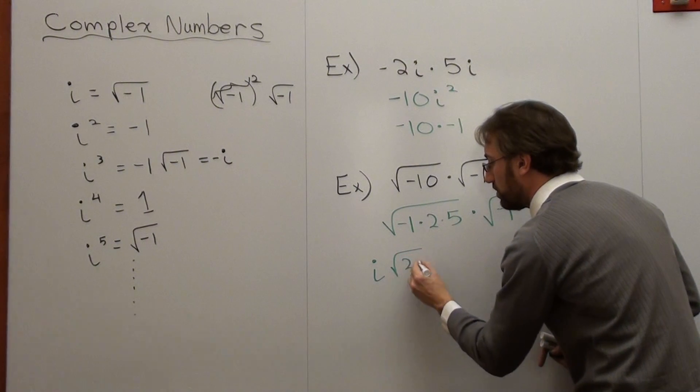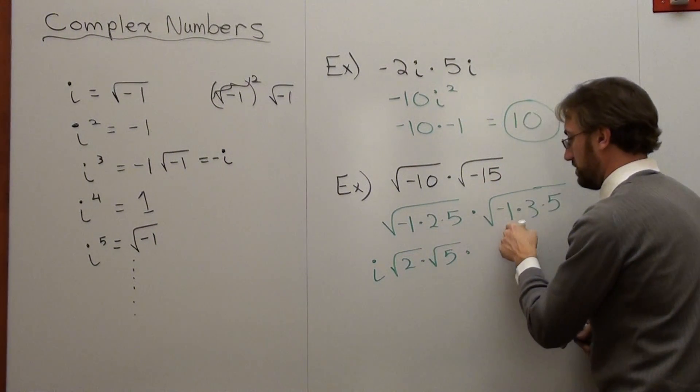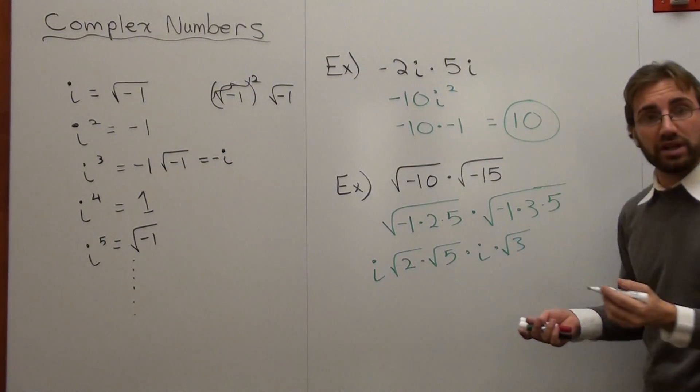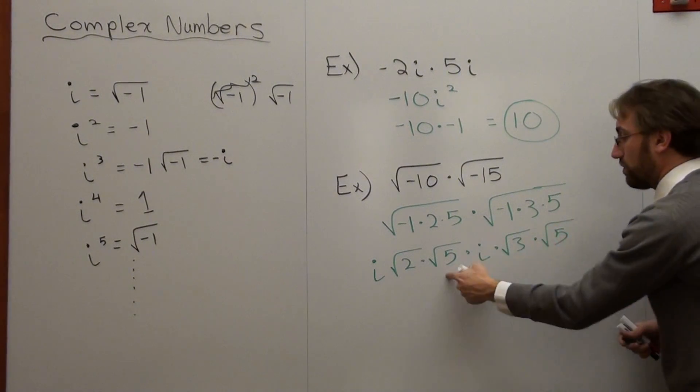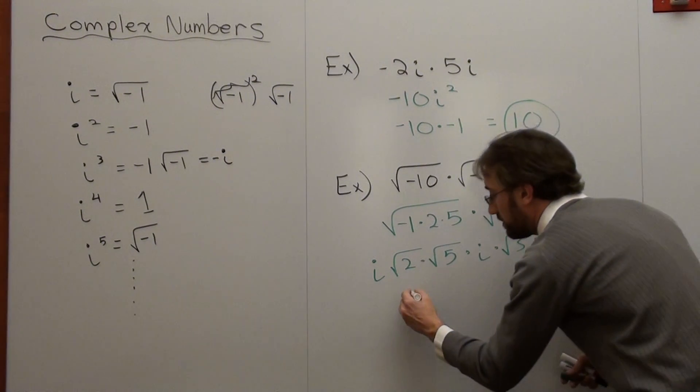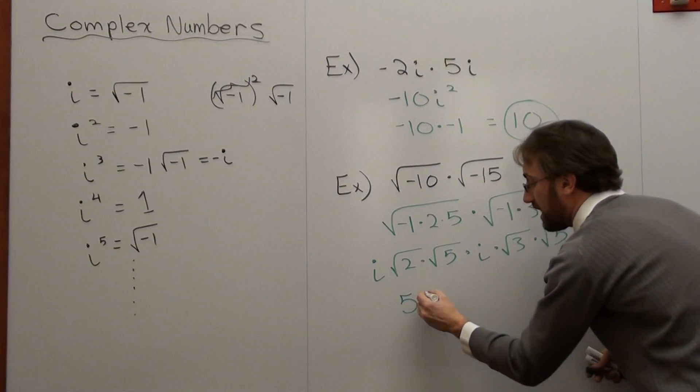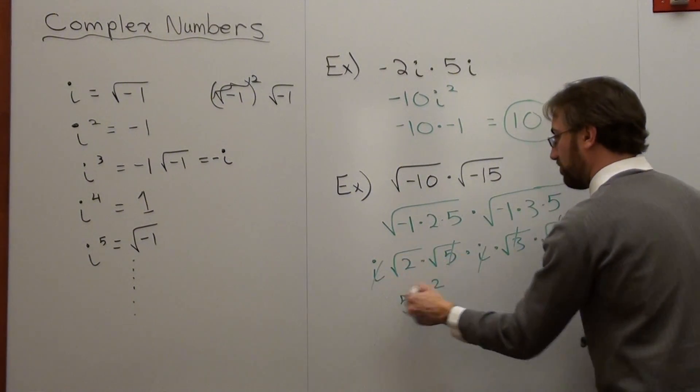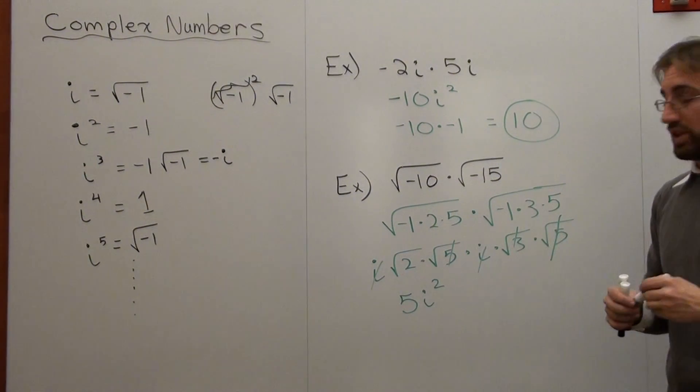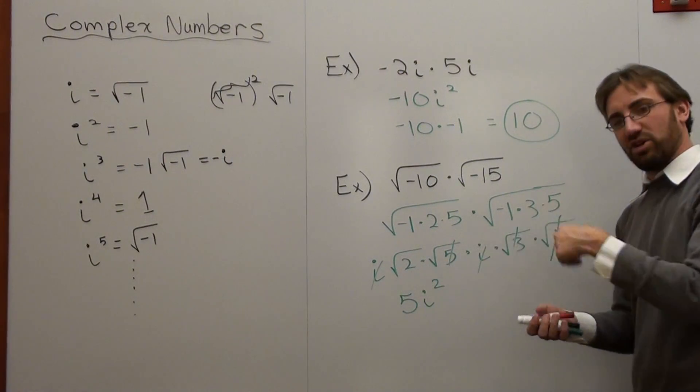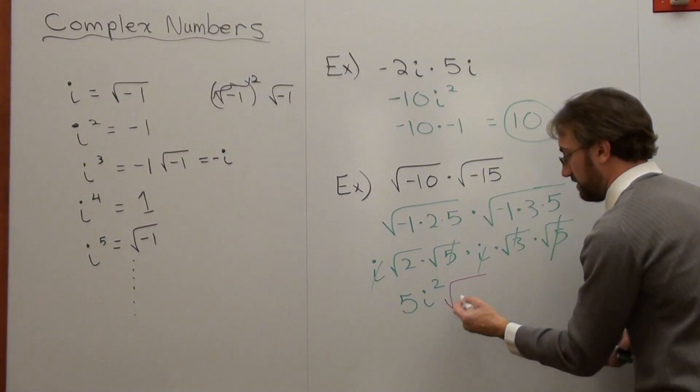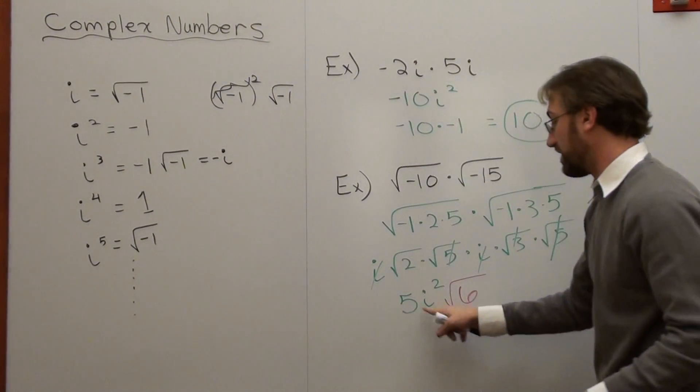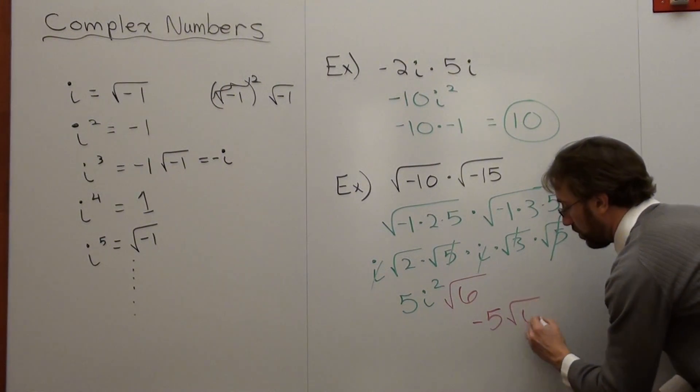And then I got root two times root five times, that's i, times root three times root five. Root five times root five is five. i times i is i squared. I accidentally crossed that one out without actually doing it right. And then you can't do anything with this, so they just go back inside. i squared, by definition, is negative one. So it's five times negative one, which is negative five, root six.